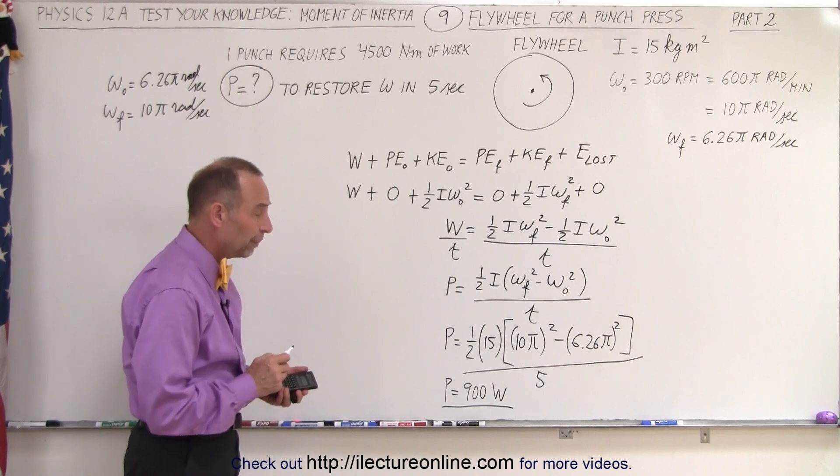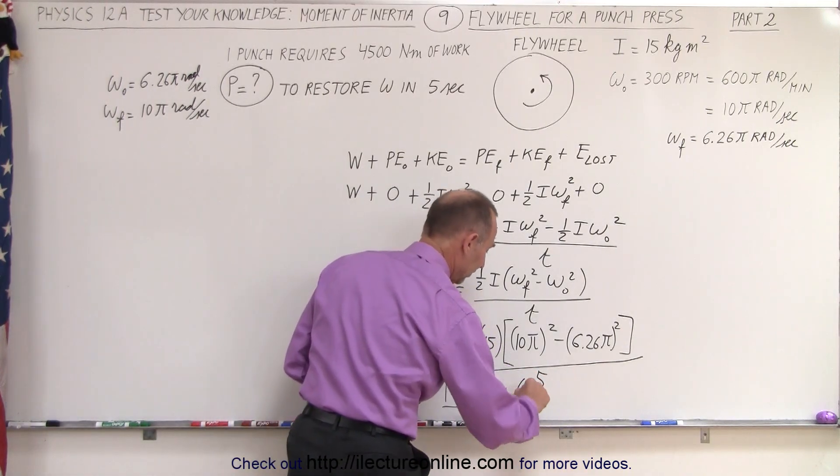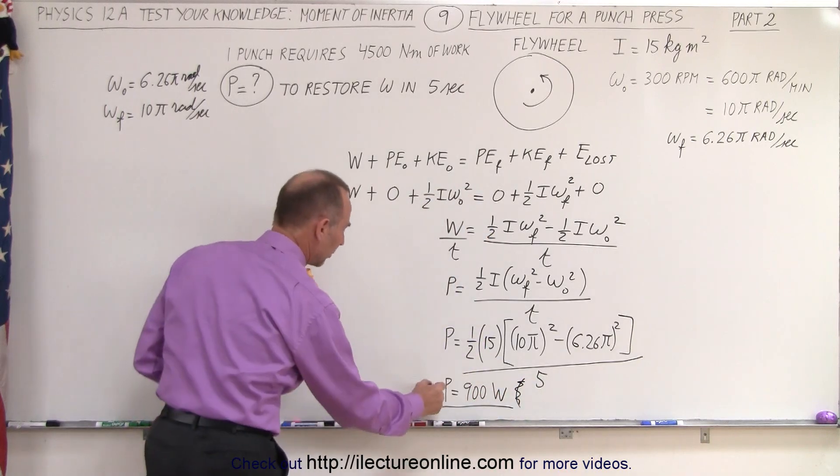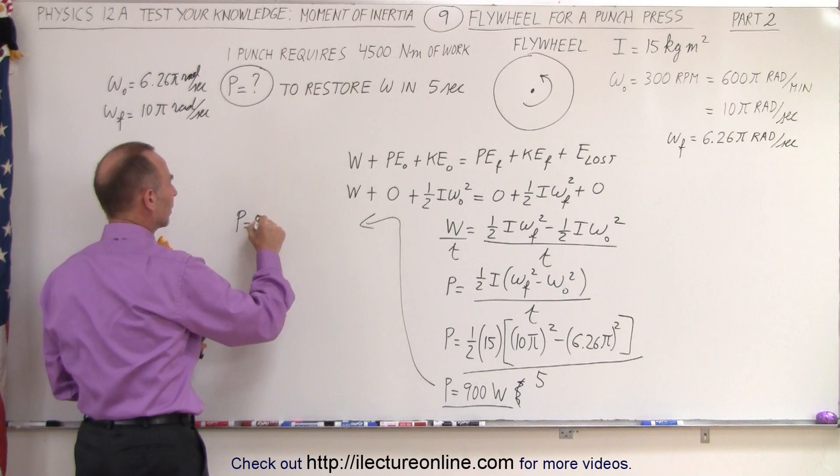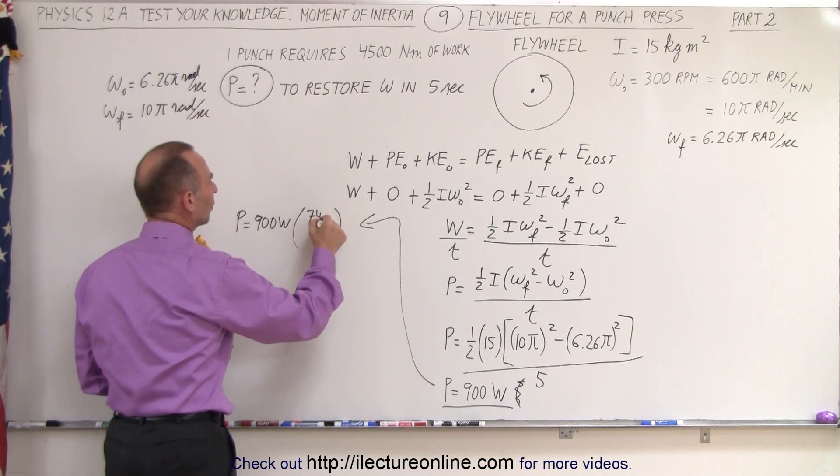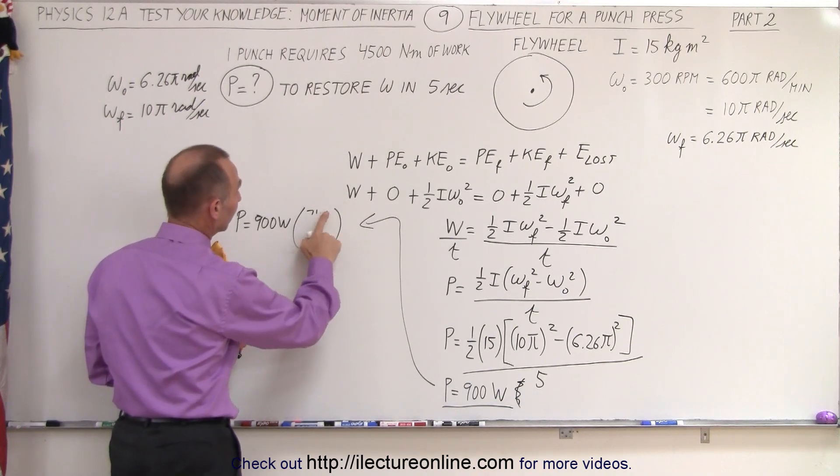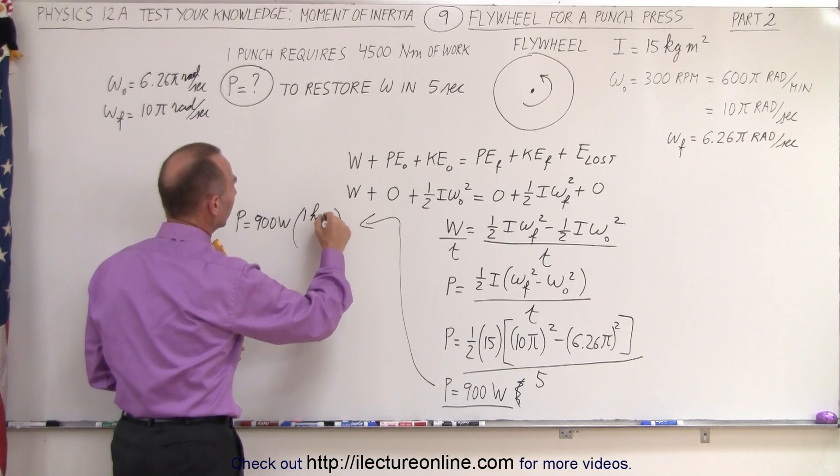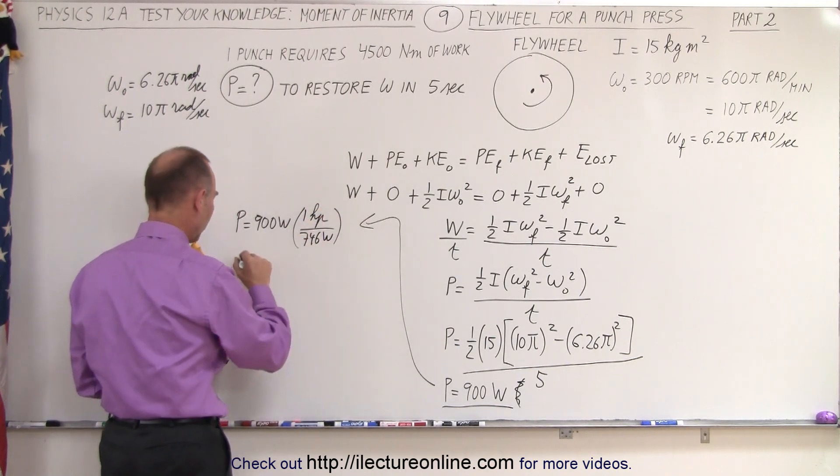Watts is the standard unit for power. Now, if we want to convert that to horsepower, we can multiply—I'm out of room here, so let's come up here. So power equals 900 watts times 1 horsepower divided by 746 watts, so that's the conversion to horsepower.